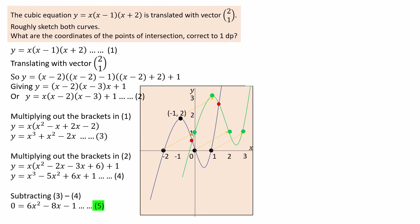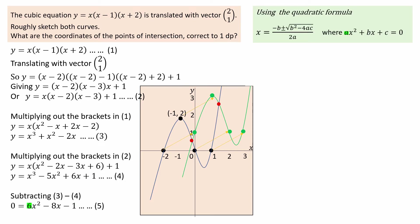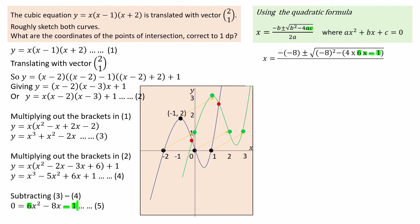To solve this equation we use the quadratic formula, where a equals 6, b equals negative 8, and c equals negative 1. Substituting: minus negative 8, plus and minus the square root of negative 8 all squared, minus 4ac, which is 4 times 6 times negative 1, all over 2a, which is 2 times 6.